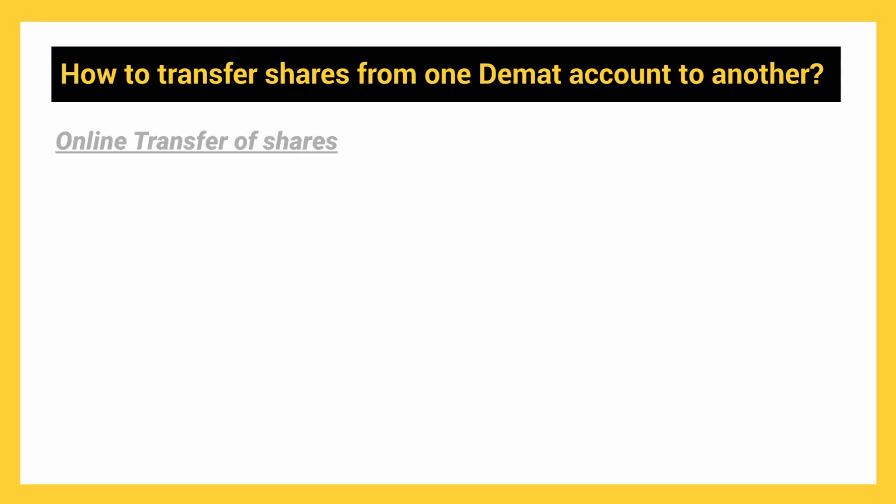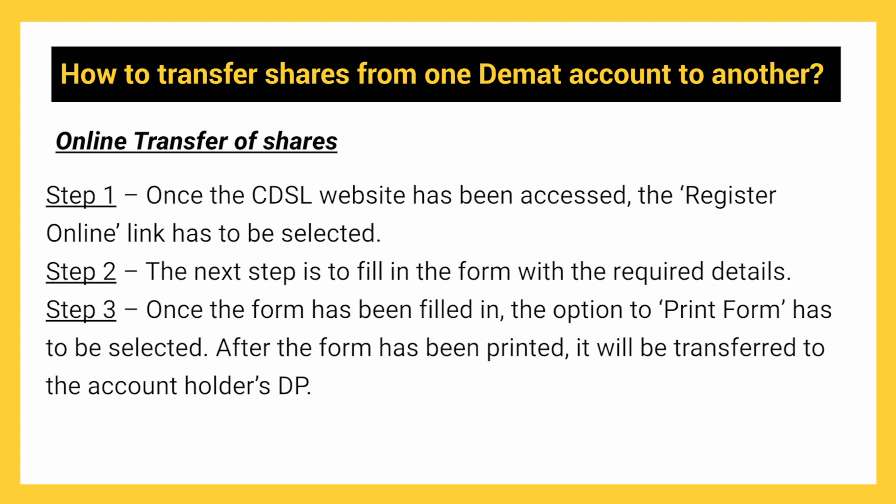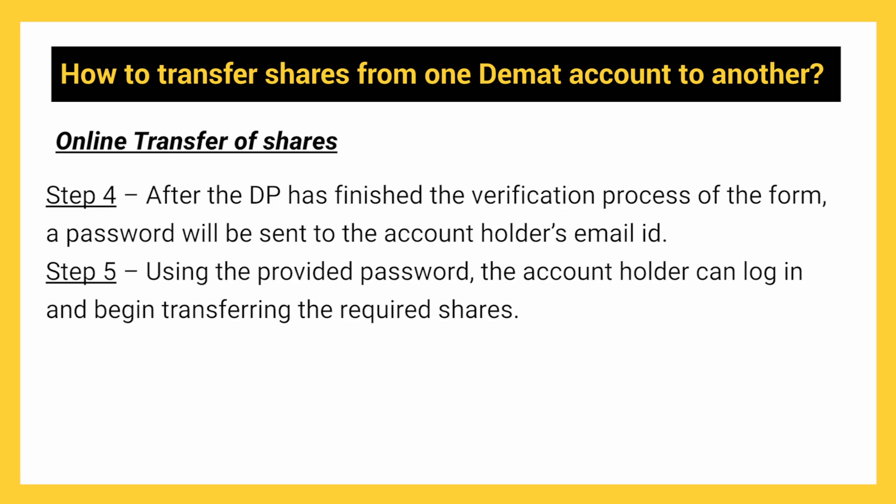For online transfer of shares, it can be done using CDSL. The account holder must visit the CDSL website and register. Once done, the form must be submitted to the depository participant. After the DP completes the verification process, the account holder will be allowed to make future transfers. Steps for online transfer: first, access the CDSL website and select the register online link. Fill in the form with the required details, then select the option to print the form and transfer it to your DP. After the DP finishes verification, a password will be sent to the account holder's email ID. Using the provided password, the account holder can log in and begin transferring the required shares.